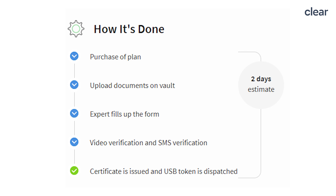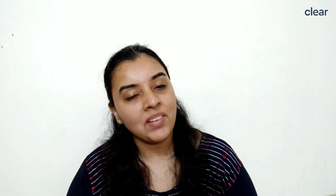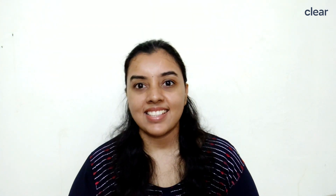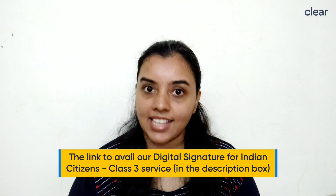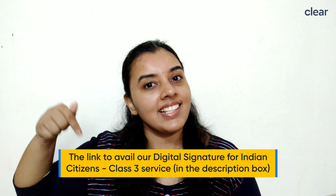Step 5: The digital signature certificate is issued after verification is complete and the USB token is dispatched. The USB token is a password-protected physical device containing your digital signature. Our experts will follow up with the respective authority until you receive your DSC, and you can contact them at any time to clarify your queries. The Class 3 DSC issued to you is valid for 2 years, and you can renew it before expiry by purchasing the same plan and following the same steps. The link to our Digital Signature for Indian Citizens Class 3 service is also provided in the description below.